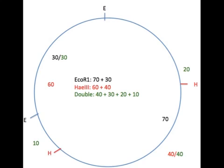Now we have, reading clockwise, 20, 40, 10, and 30 kb fragments from the double digest. And our HaeIII single digest fragments are 40 and 60 kb in size.